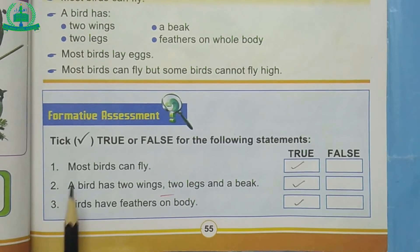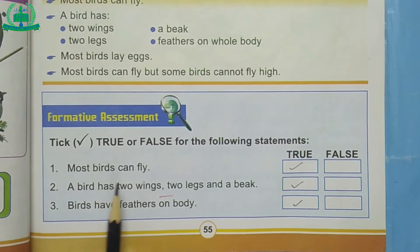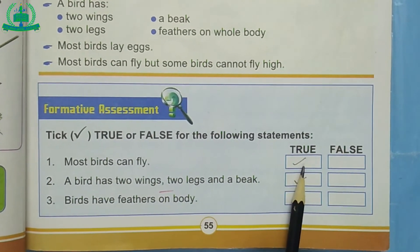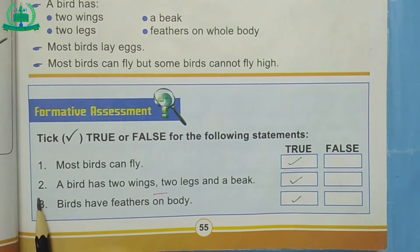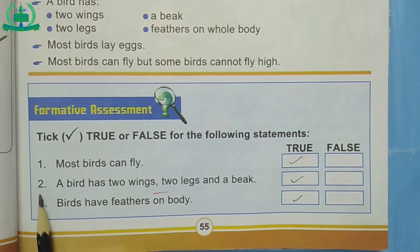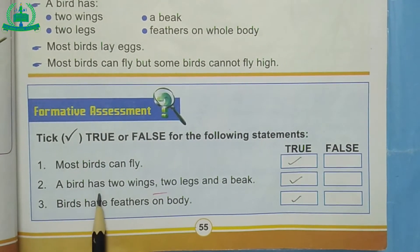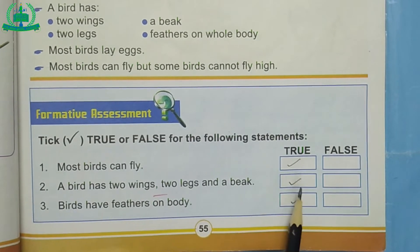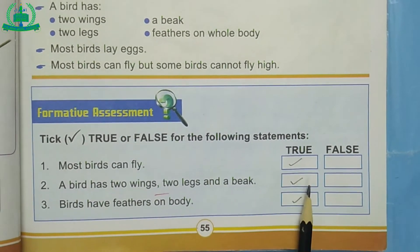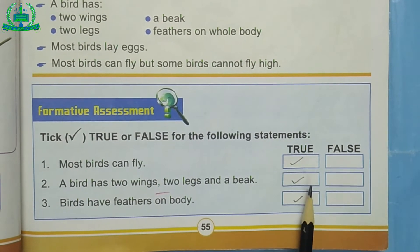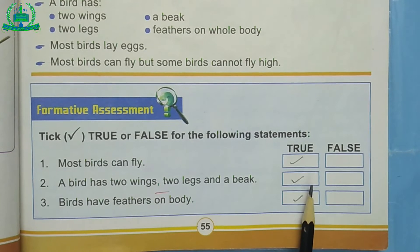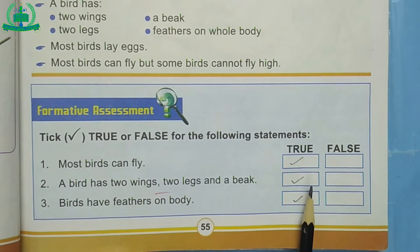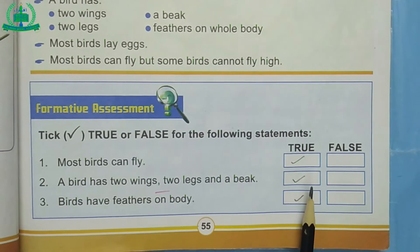Number 1: Most birds can fly. This statement is true because they have wings. Number 2: A bird has two wings, two legs and a beak. This statement is true because birds can fly with the help of wings and birds can eat with the help of beak.